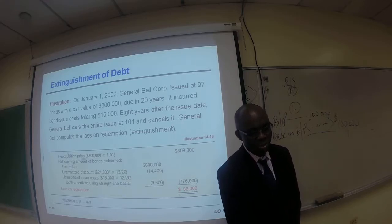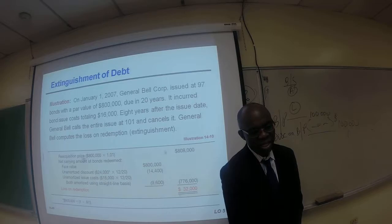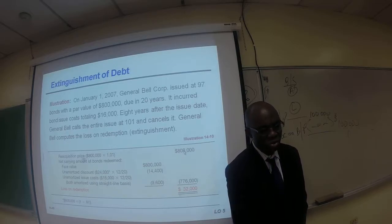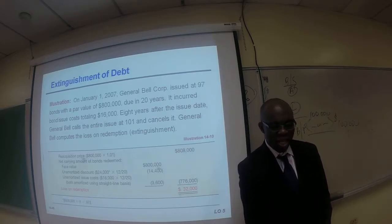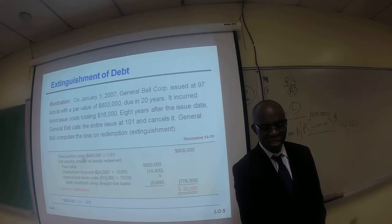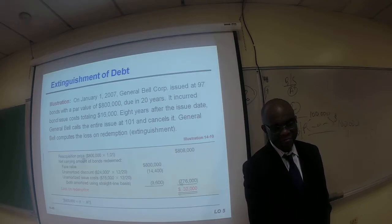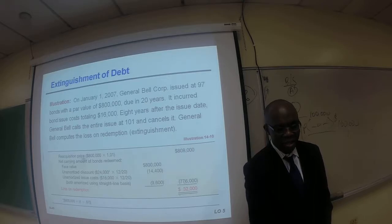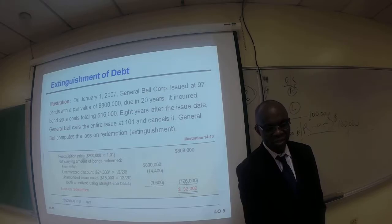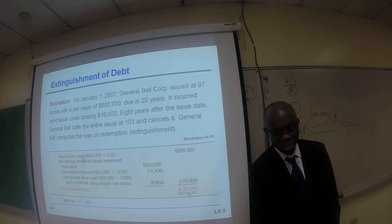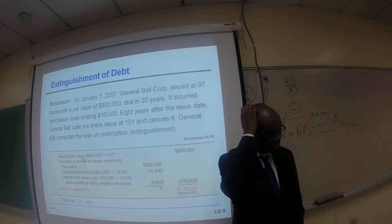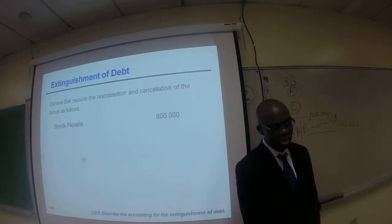Look at the calculation — that is the most important thing. $800,000 par value multiplied by 101% gives you $808,000. The par value is $800,000; however, the unamortized discount is $14,400, and the unamortized issue cost is $9,600 — both need to be backed out. So the book value is $776,000. But we wind up paying $808,000, for a difference of $32,000. That $32,000 is a loss on redemption and is recorded as such. Here are the related journal entries — you can follow these on your own.